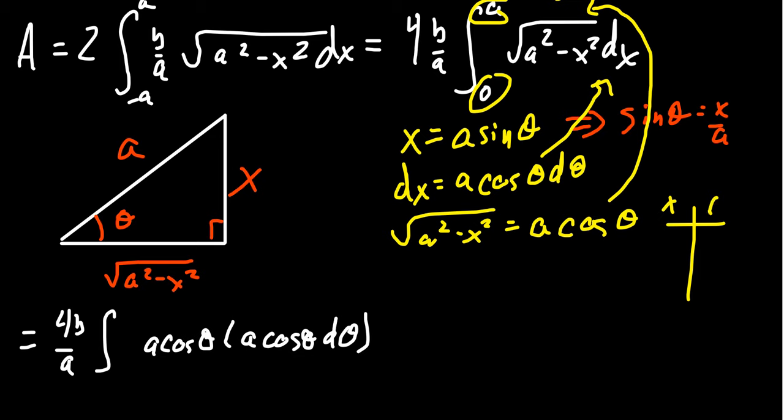We have a t-chart here. We know what x is, we need to figure out what theta is. x will go from 0 to a. Using this identity, we can figure out what theta is. For example, when x equals 0, you get 0 equals a sine theta.